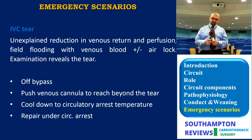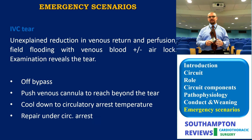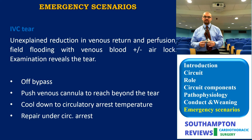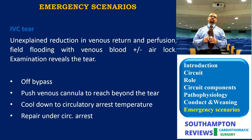IVC tear: you find out by an unexplained reduction in venous return, reduced perfusion, flooding with venous blood, and on examination the cannula may be out or there is a tear. First step: go off bypass, advance the venous cannula to reach beyond the tear, cool down the circulation to achieve circulatory arrest, and then repair under circulatory arrest.